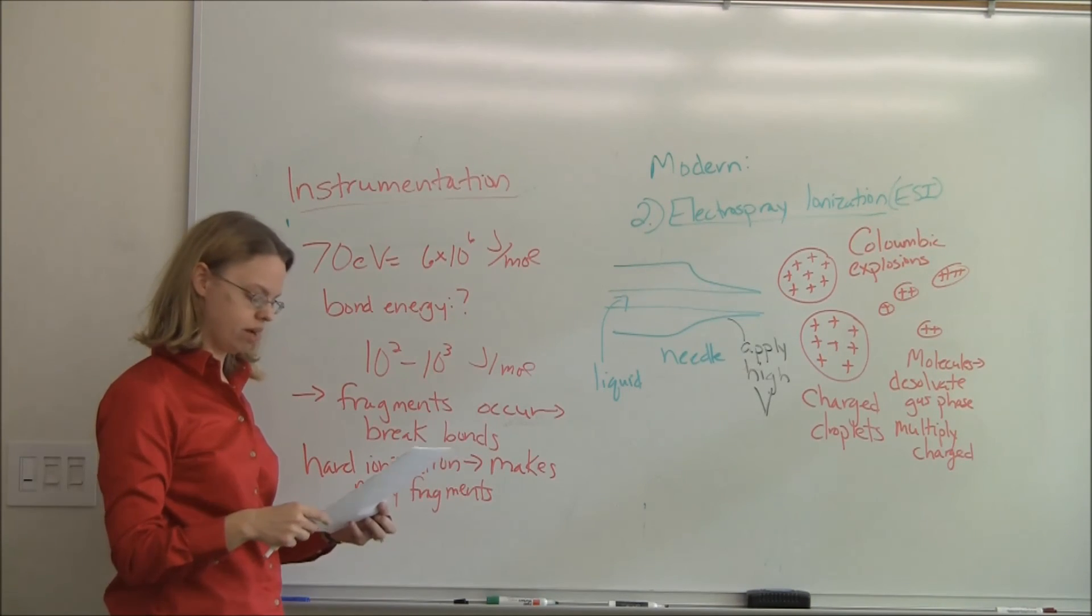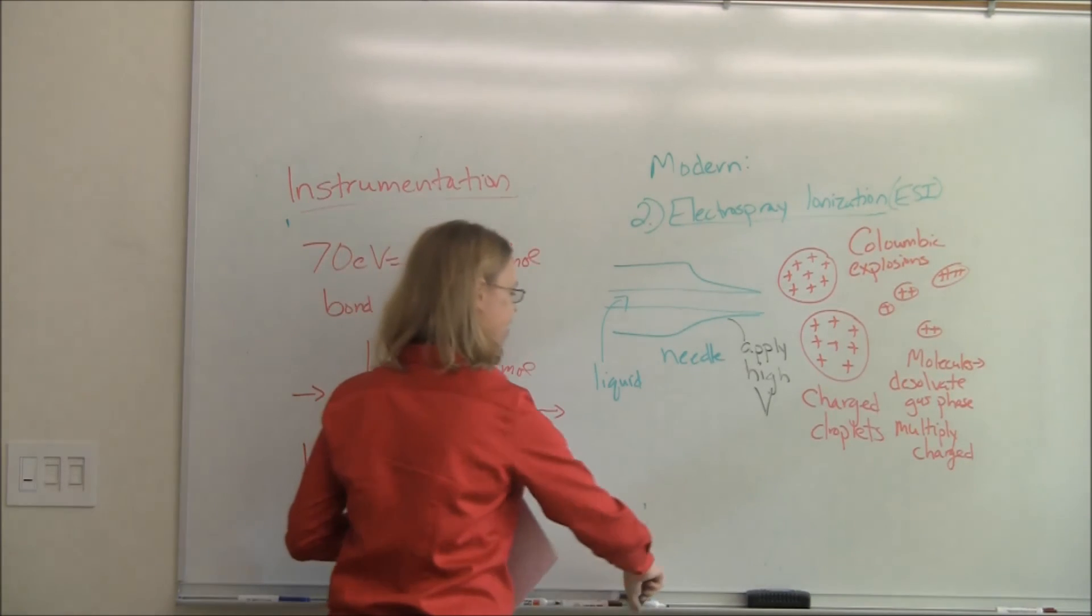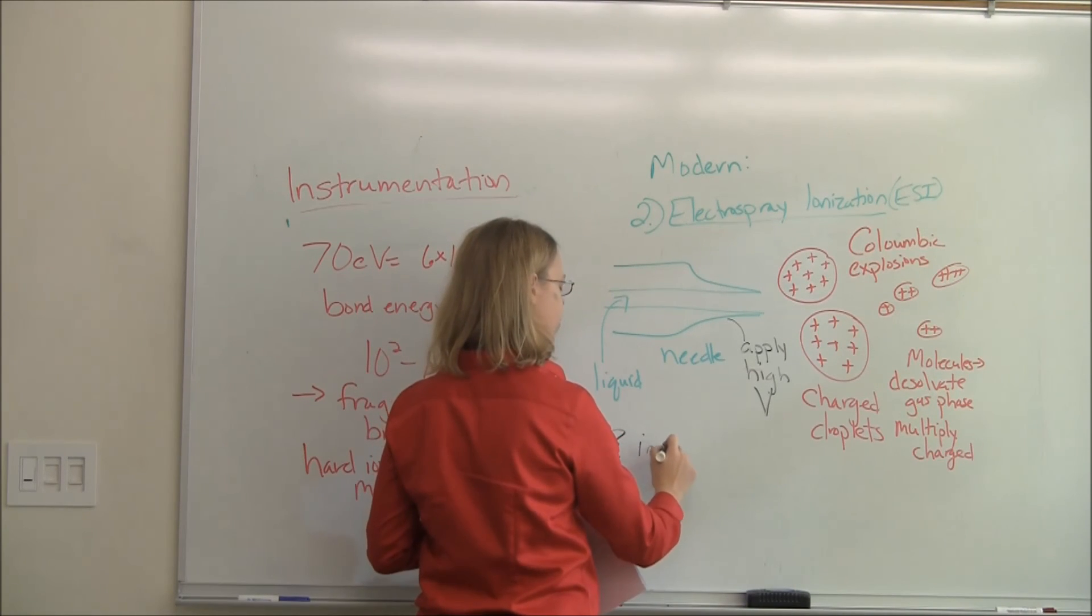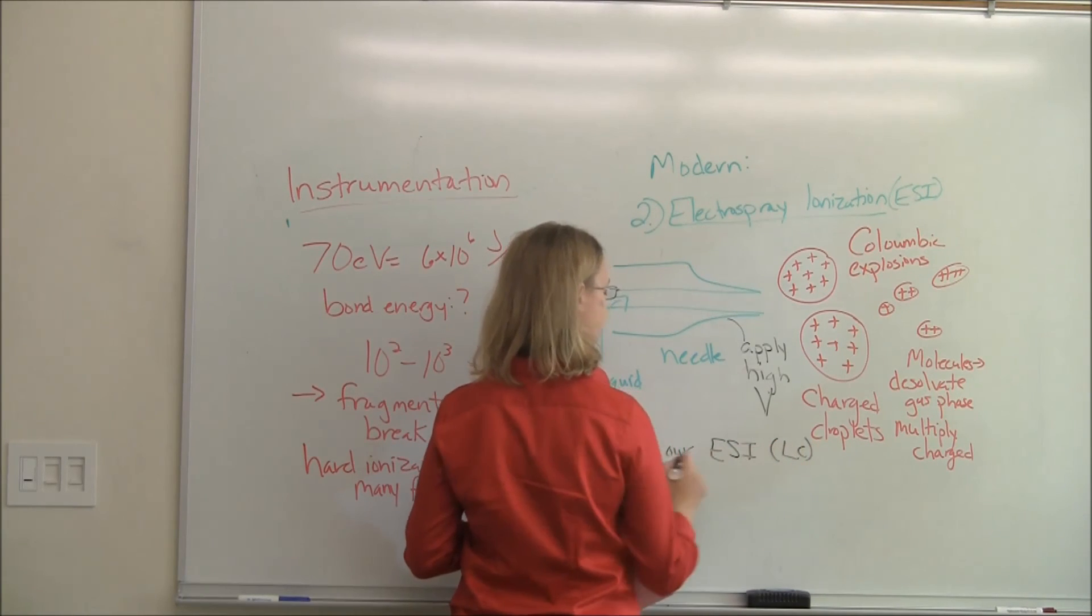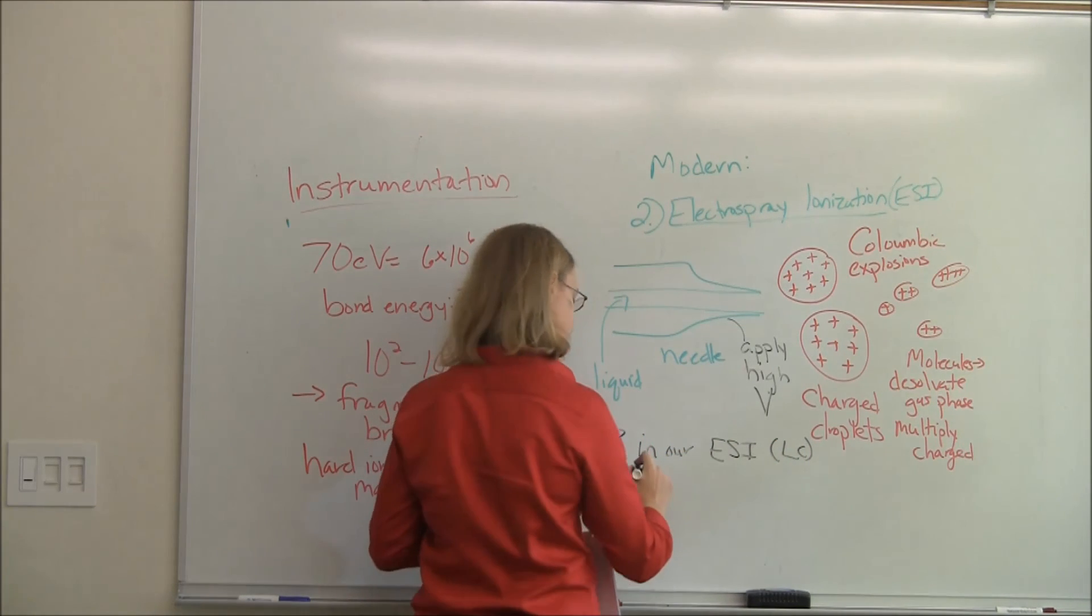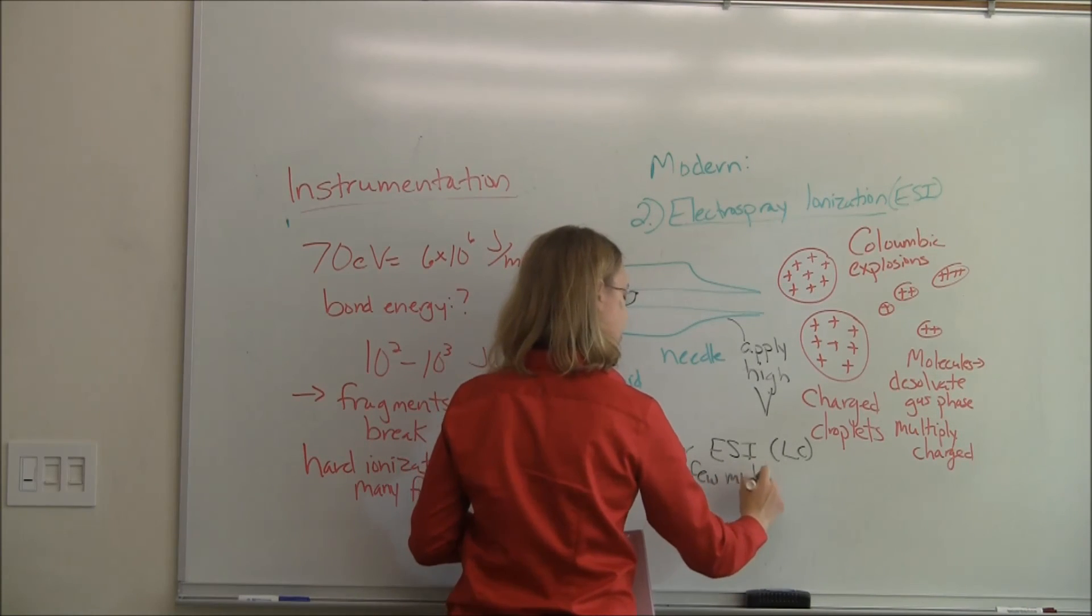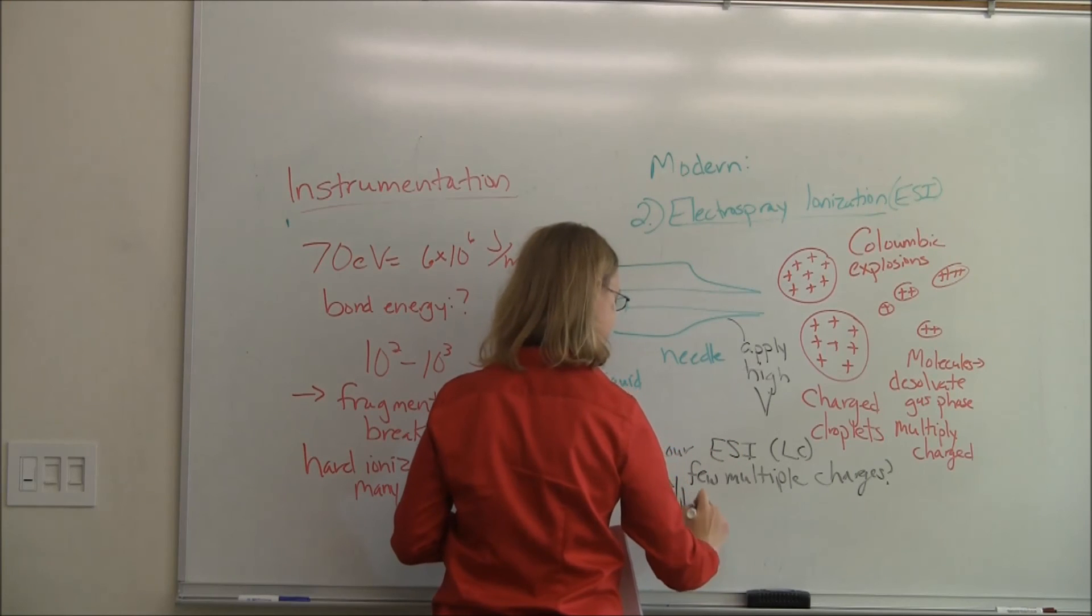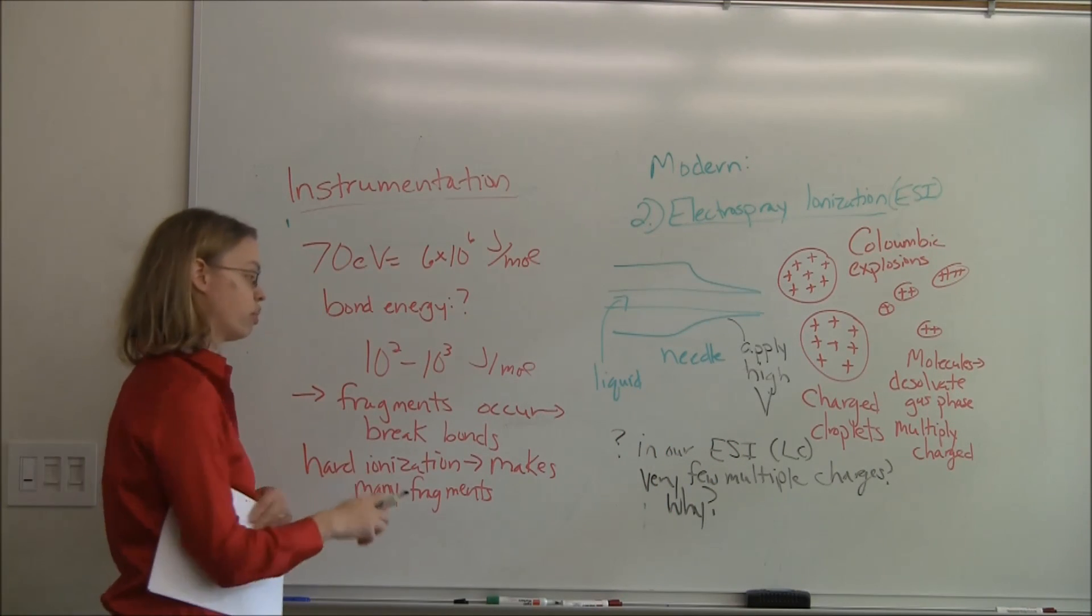Now there is sort of a good question, and that's a question I'm not going to answer in this lecture. But there is sort of a question. In our lab, we're going to do electrospray for an LC experiment. But we're not going to get multiple charges. And so the question is, why? So think about that. It has to, I'll give you a hint, it has to do with the molecular structure of what we're looking at.